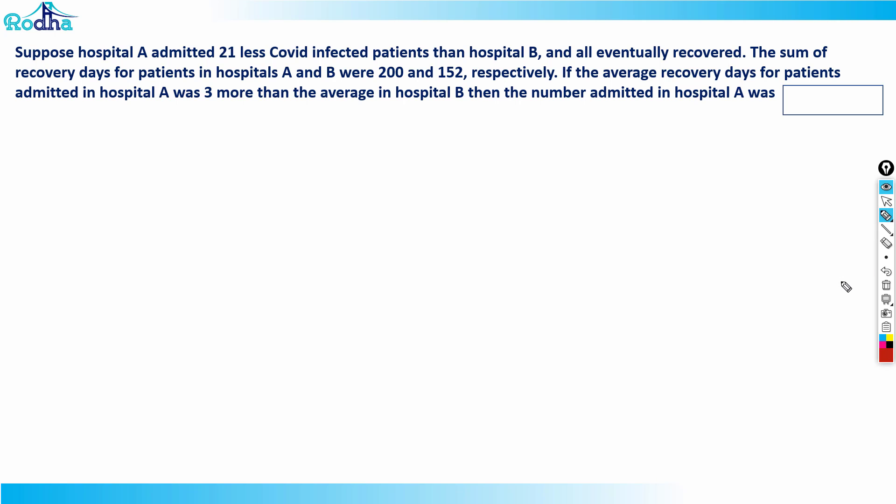Let's look at this next question from CAT 21 Slot 1 — a general arithmetic question. It says that hospital A admitted 21 less COVID infected patients than hospital B, and all eventually recovered. The sum of recovery days for patients in hospitals A and B were 200 and 152 respectively. If the average recovery days for patients admitted in hospital A was three more than the average in hospital B, find the number admitted in hospital A.